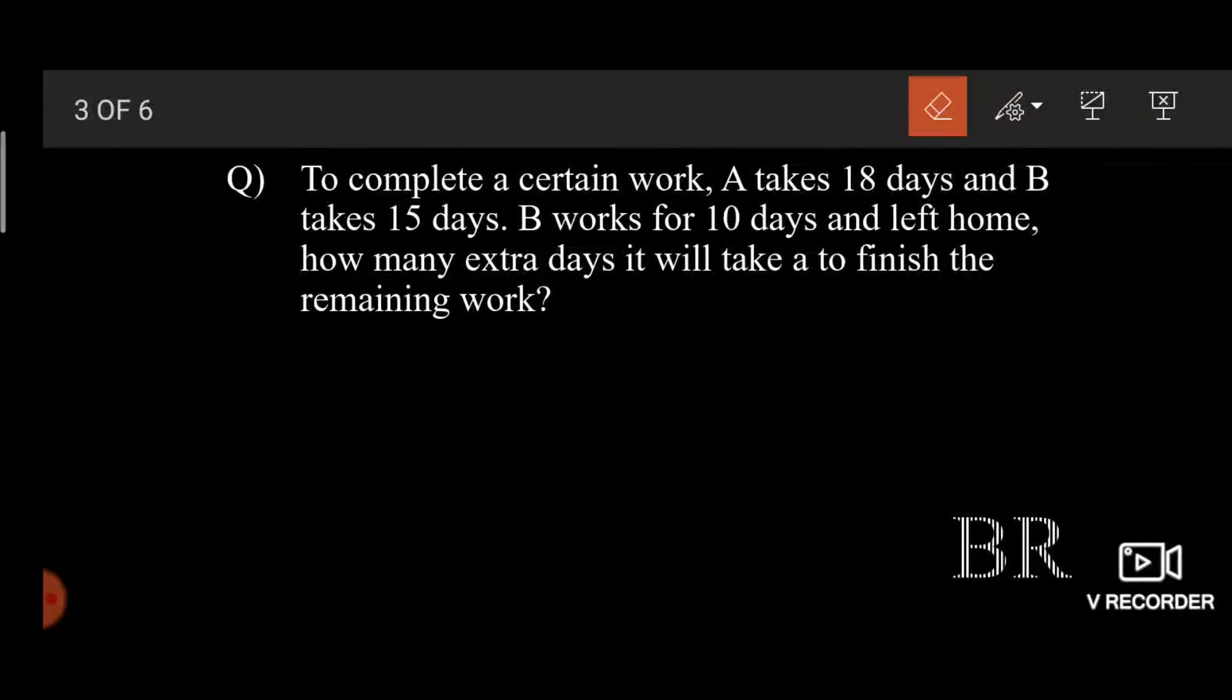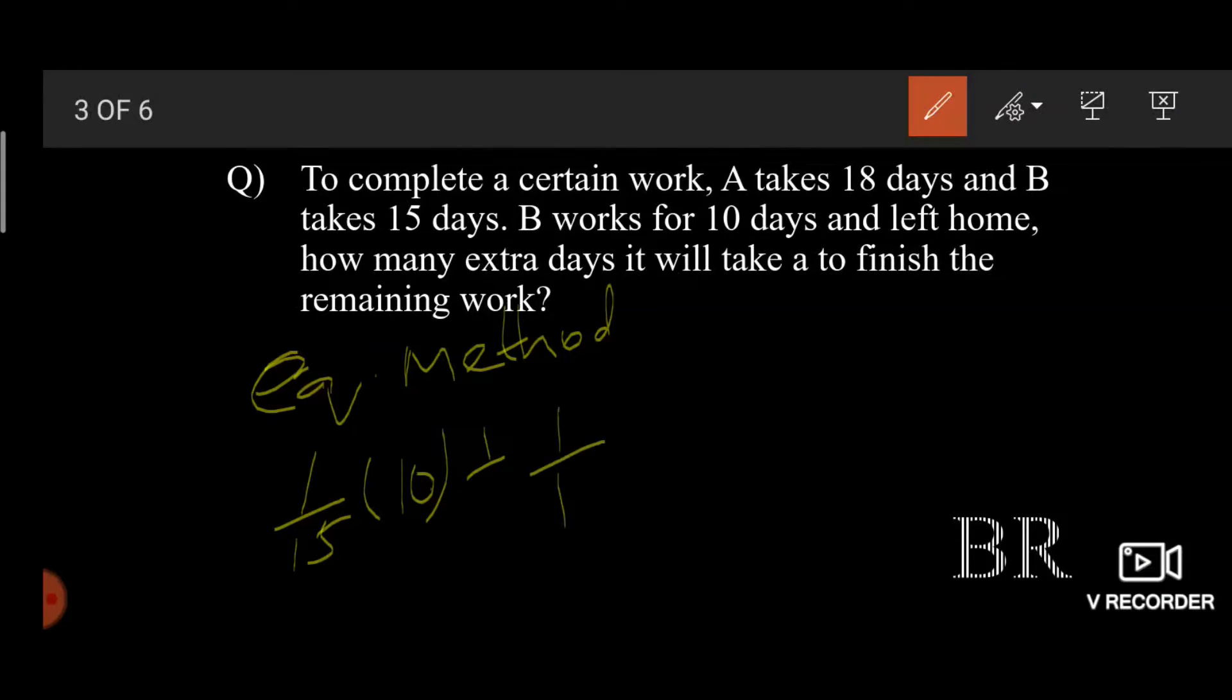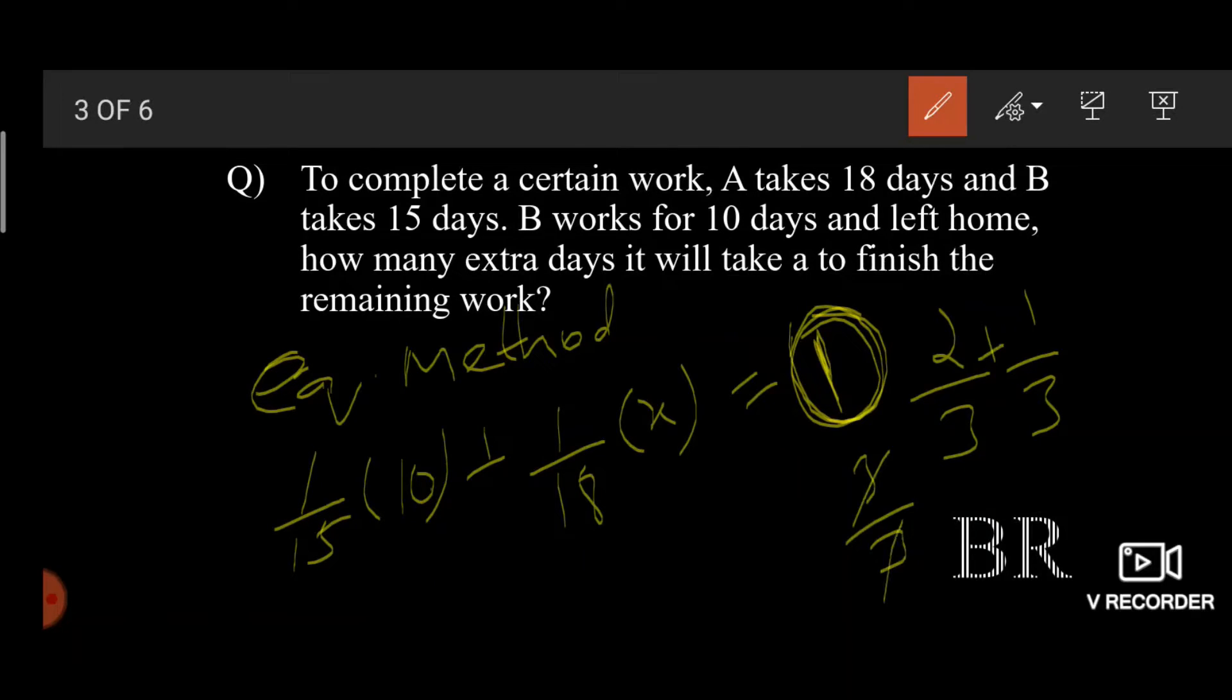And the last method is equation method. 1 day work of B is 1 by 15 into 10 as he works for 10 days, plus 1 day work of A is 1 by 18, and we don't know how many days he works. They'll make 100%. Why I wrote 1 here is because we all know that in the previous method, we observed that B does 2 by 3 of the work and A does 1 third. When we add these both, we get 3 by 3, which means 1. So 1 is the entire work. That is what I wrote here.